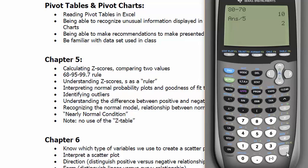Suzy scored a 64, which is six lower than the mean, giving a z-score of negative 1.2 after dividing by the standard deviation of five. Comparing the two, Johnny's z-score of positive 2 is further from the mean than Suzy's negative 1.2. So Johnny was the more unusual scorer — he was more standard deviations above the mean than Suzy was below it.